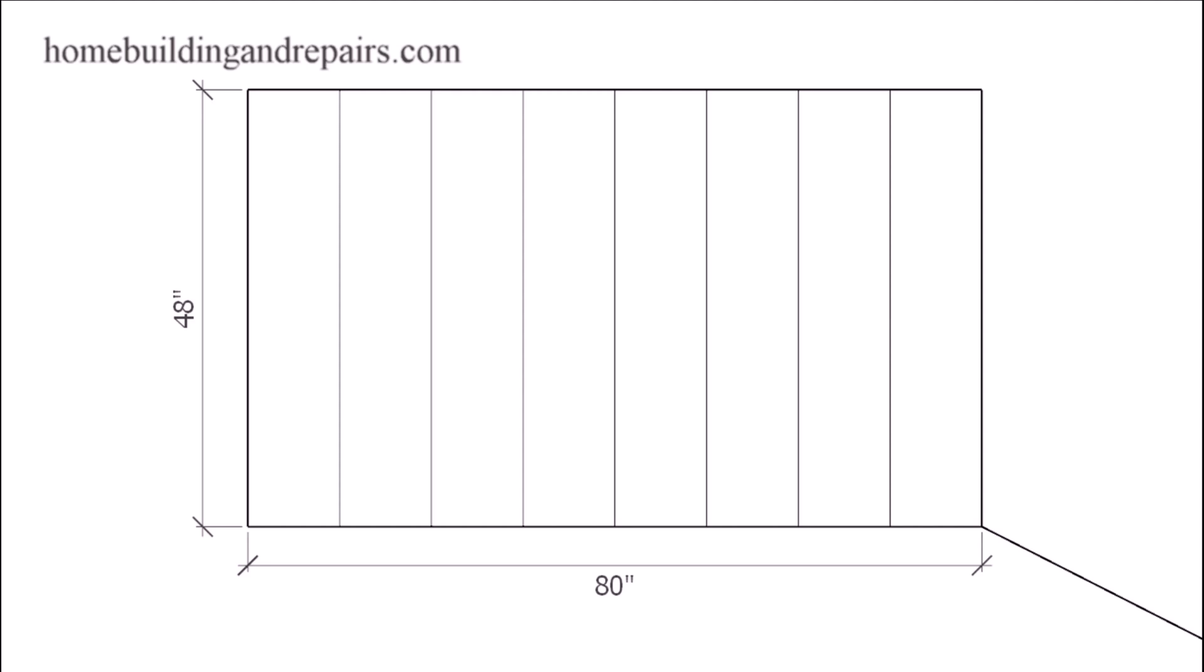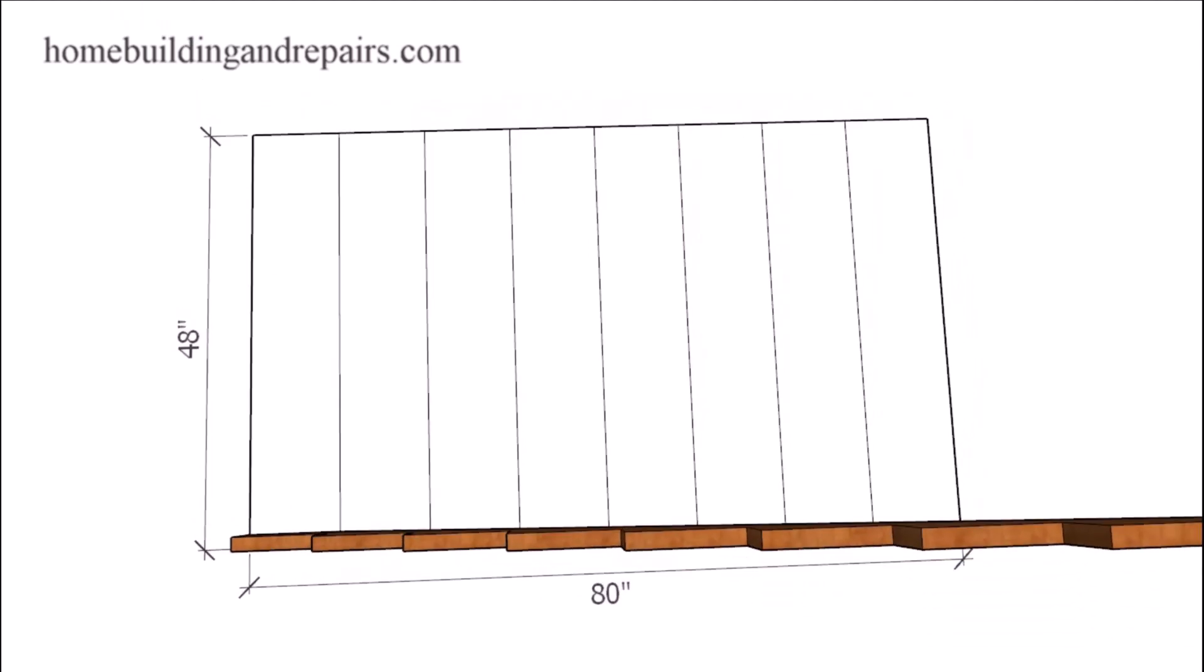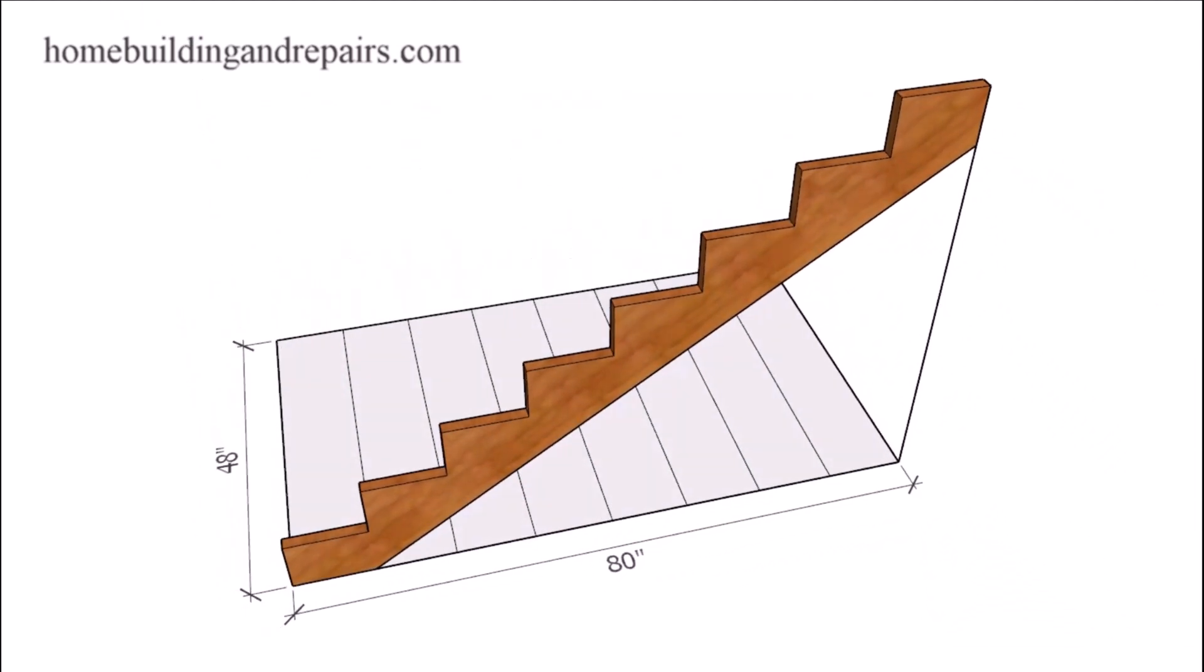So let's go ahead and get started with a floor plan layout where we have eight 10-inch treads, 48 inches wide, and the stair stringer will look something like this and use the same measurements we have for the floor plan layout.